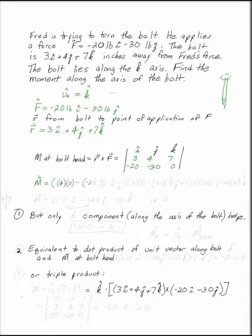4 minus 0, minus 30 times 7 in the I direction. Don't forget the minus sign when you're doing these cross products for the J component. 3 times 0 and minus 20 times 7.